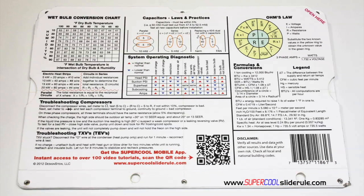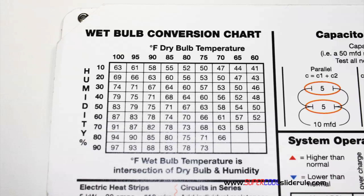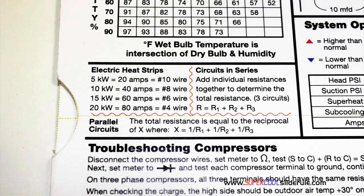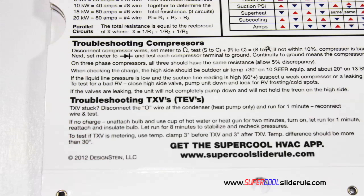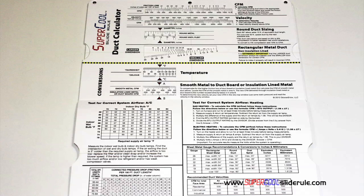The back cover contains required formulas. It has capacitor rules and practices, a wet bulb conversion chart, how to perform computations on series or parallel circuits, an electric heat strip guide, a complete system troubleshooting diagnostic chart, and how to troubleshoot compressors and TXV.